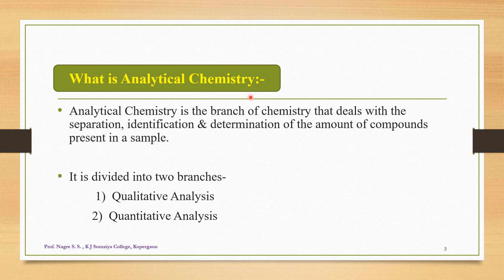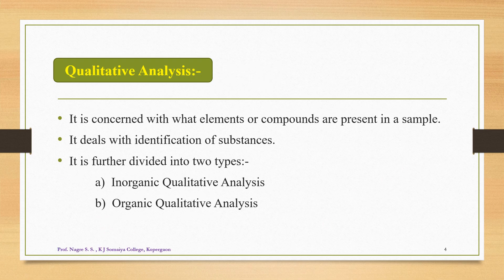As far as analytical chemistry is to be considered, it is divided into two important branches. The first branch is called as qualitative analysis, and the second important branch is called as quantitative analysis. As far as qualitative analysis is concerned, it deals with what elements or compounds are present in a sample. We have to look towards what type of elements or compounds are present in a sample — the constituent elements or compounds. It deals with identification of substances present in a given sample.